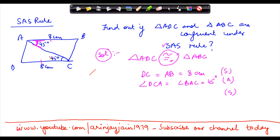However, what I also notice is that this line is common to both the triangles. So therefore, line AC is equal to AC in both these triangles.